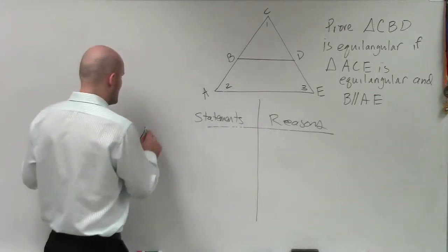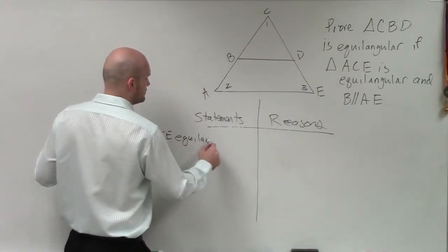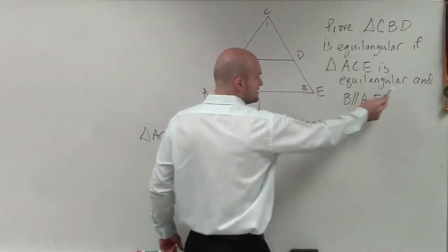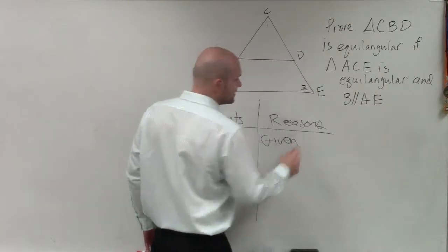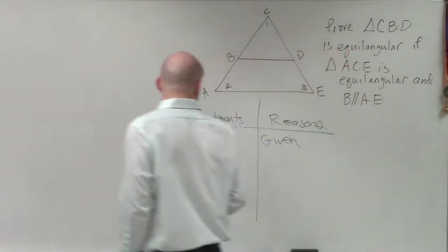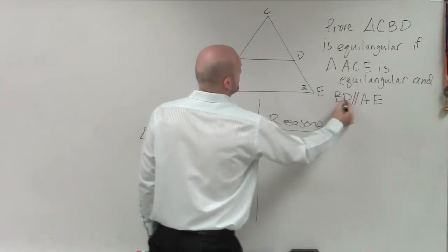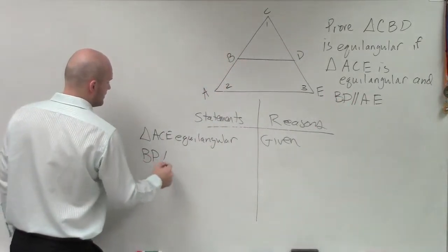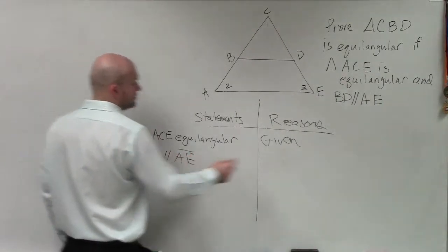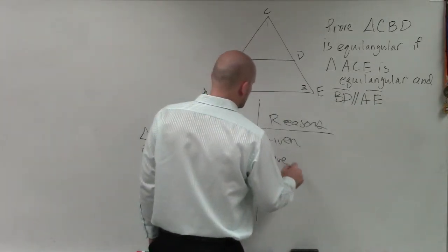So what do we know? We know that triangle ACE is equiangular — that's given to us in the problem. We also know that BD is parallel to AE. Why do we know that? Because it's given. Those are pretty easy first steps.